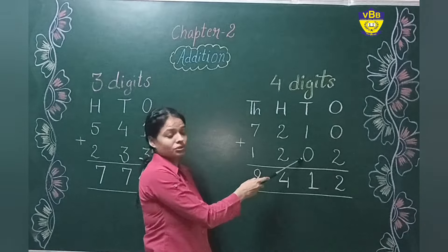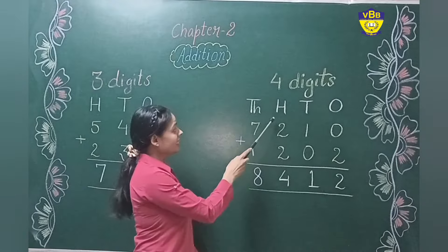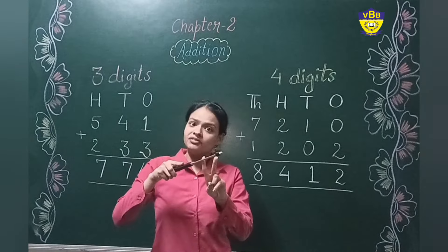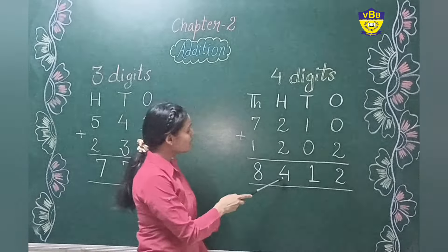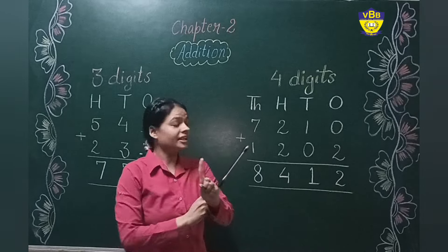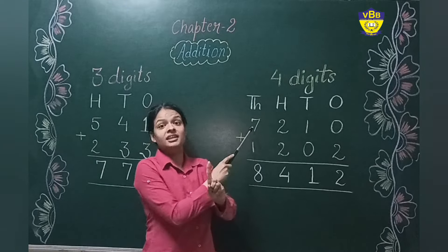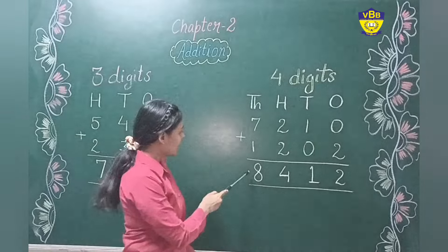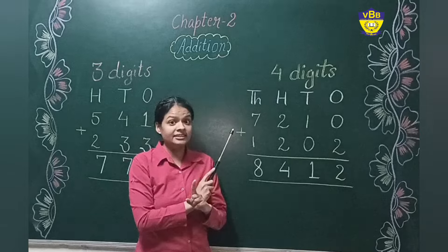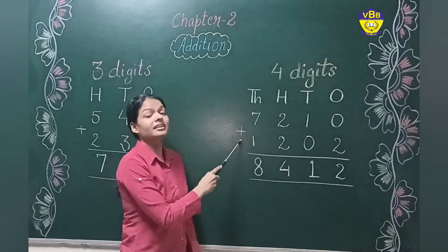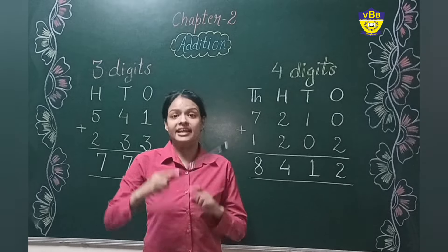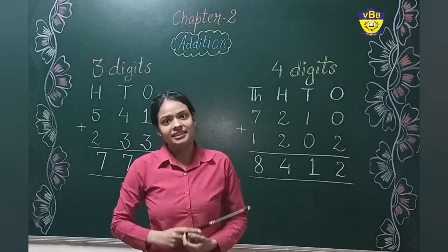And now on the hundreds place, two plus two — I will open two fingers and count after two: three and four. And you can see that four is already written here. With the thousandths place, I will open one finger and count after seven — and it will be eight. So I have written eight here. We do this because we are doing addition, and please don't forget to put the addition sign, because this sign tells us what we are going to do — addition or subtraction.